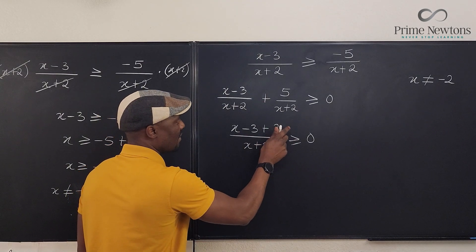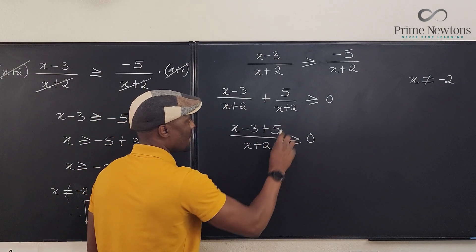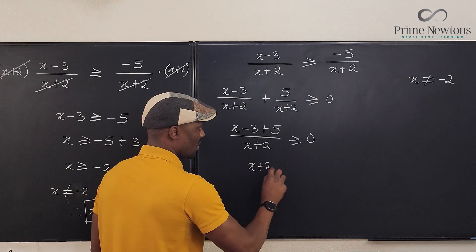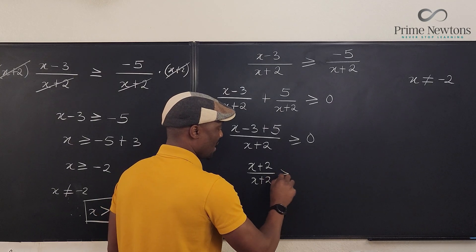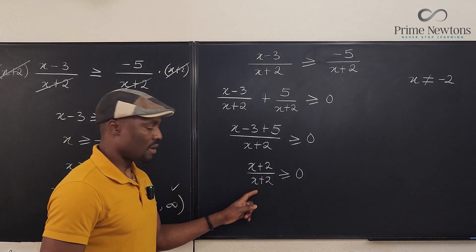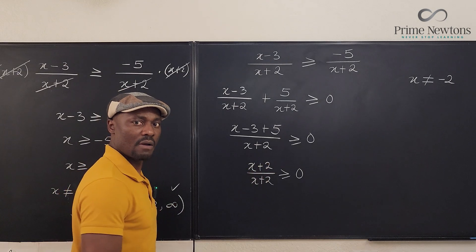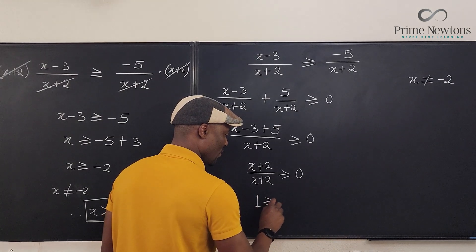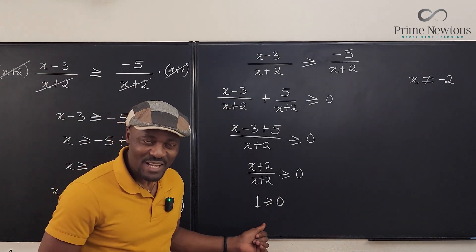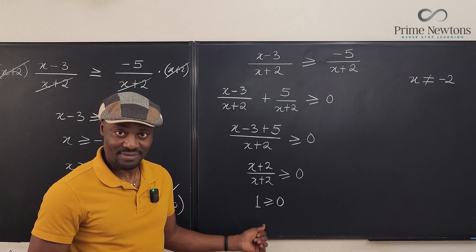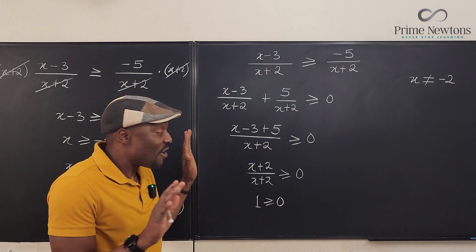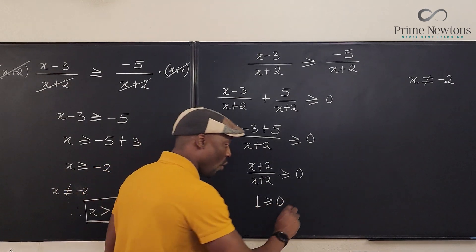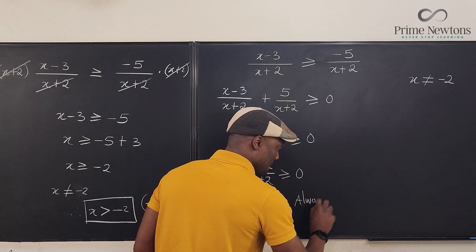So if I put these together, what do I get? I get x plus 2 divided by x plus 2 is greater than or equal to 0. But this is, I can cancel out. What do I get? I get 1 is greater than or equal to 0. This statement is always true. You see that? I don't have to worry about anything. If at the end of the day, I have a statement that is always true, always true.